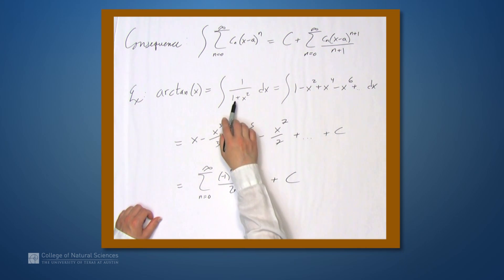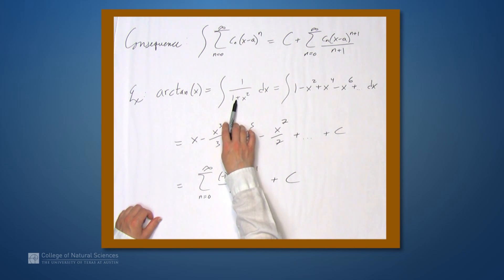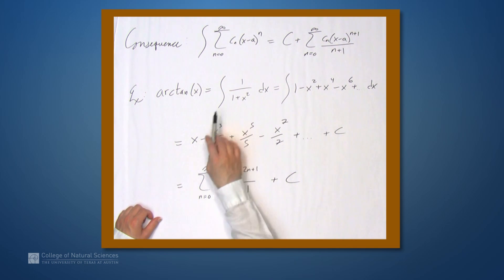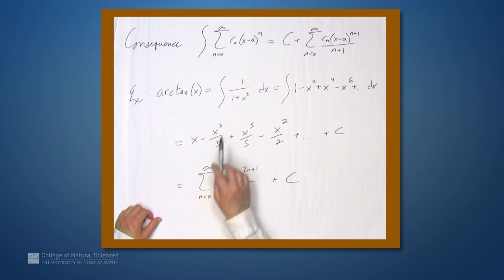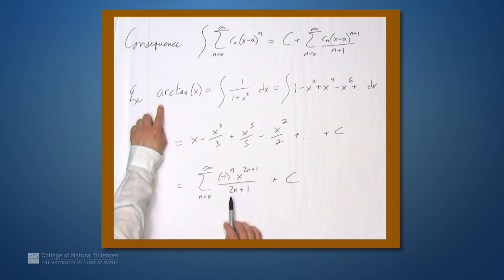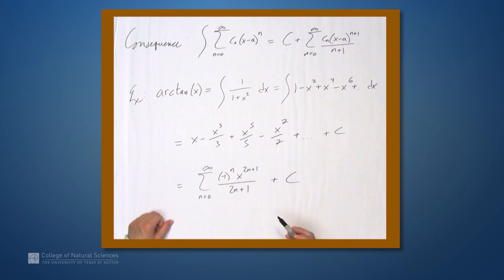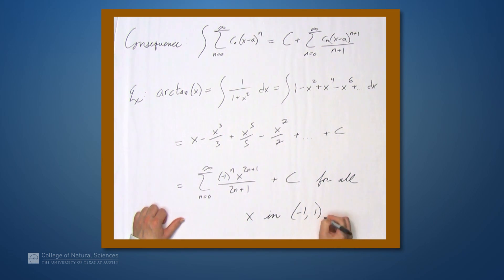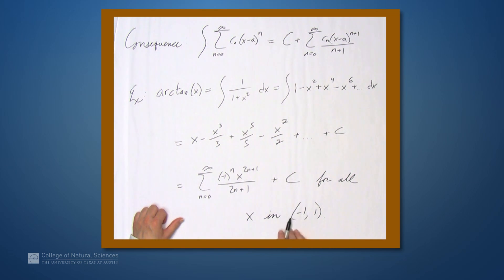This is true for any value of x within the radius of convergence of the series. Differentiating or antidifferentiating does not change the radius of convergence. Since 1 over 1 plus x squared had radius of convergence 1, our power series representation of arctangent of x also has radius of convergence 1, meaning it is true for all x in the open interval from negative 1 to 1. We are not making any claims about what happens at the endpoints negative 1 or 1.